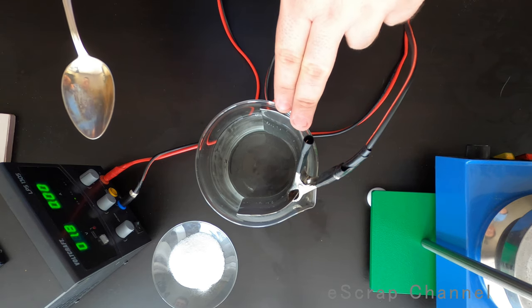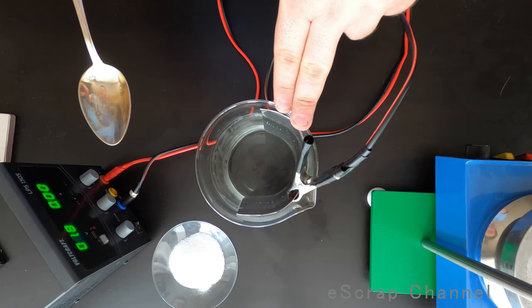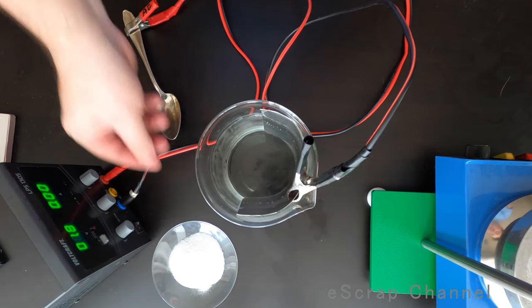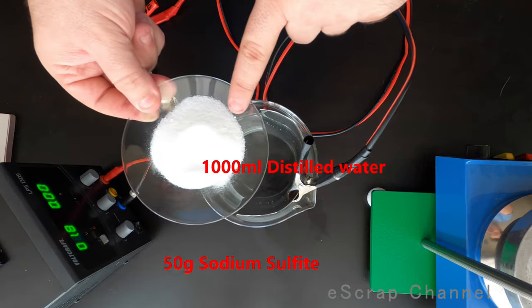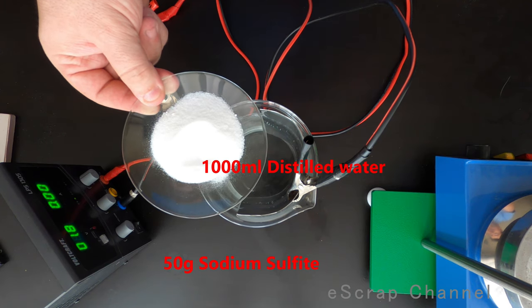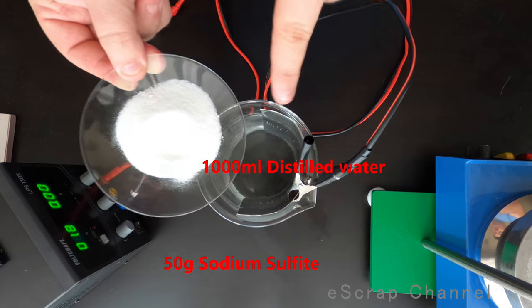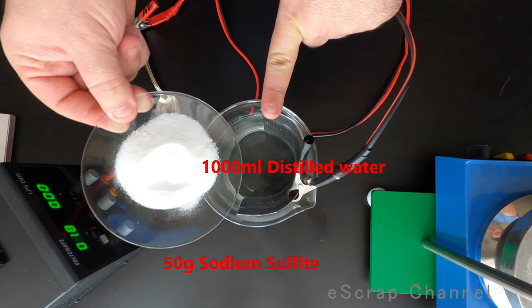As electrode here I use stainless steel and distilled water. What is this white chemical? This is sodium sulfate. 50 grams per 1 liter of water.